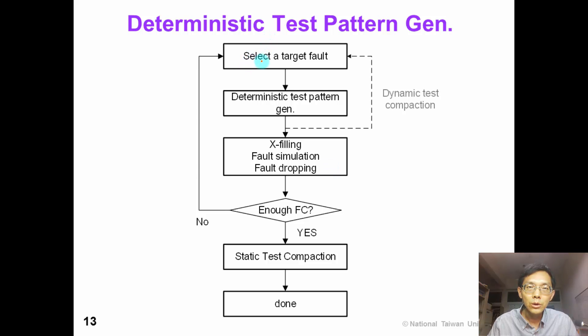In this flowchart, first we select a target fault and we perform deterministic test pattern generation. If we want to perform dynamic test compaction, we would loop back to select the next target fault for test generation. After we finish this loop, we would move on to x-filling fault simulation and then drop the detected fault.